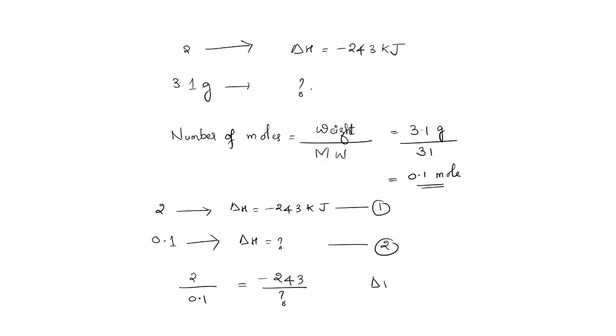So ΔH = -243 × 0.1 / 2. This is equal to -12.15 kJ.